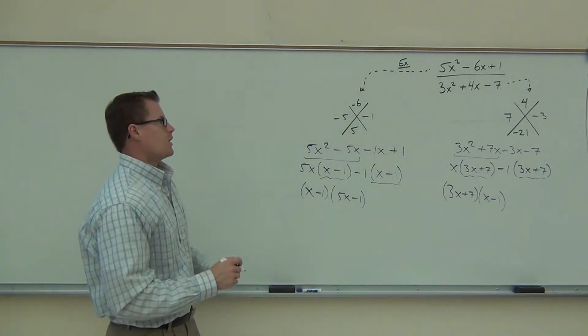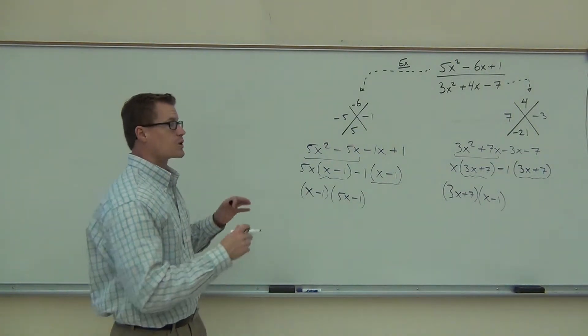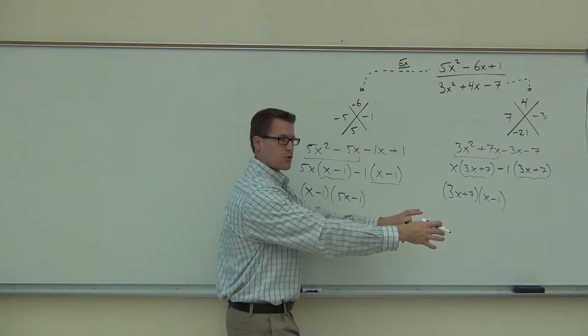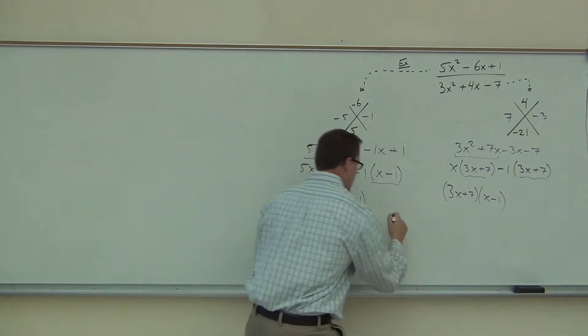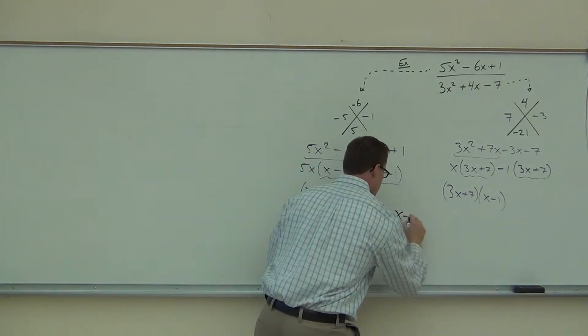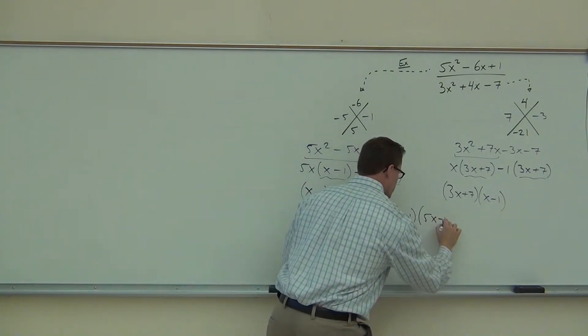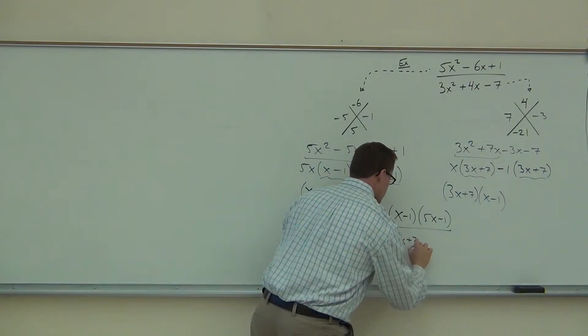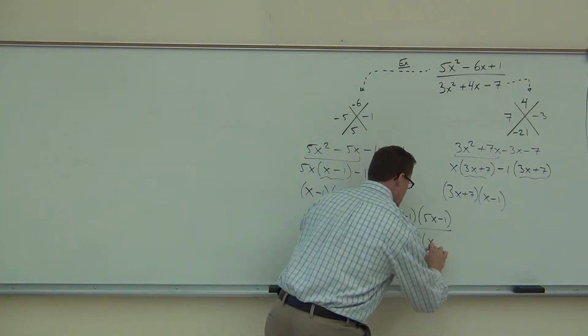I'm going to do this. Okay, now we're almost done. What we're going to do, we're going to take these factored versions, we're going to put them back in our fraction form. So from our numerator, we have the x minus 1, and we have the 5x minus 1. From our denominator, we have 3x plus 7, and we have x minus 1.